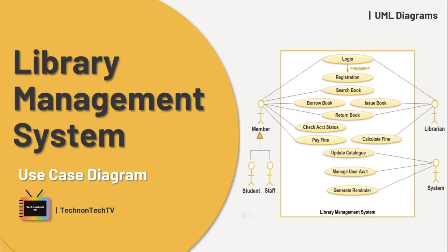The use case diagram includes essential actions such as logging into the system, returning books, borrowing books, and managing books. The librarian is responsible for tasks such as issuing books and calculating the fine. On the other hand, the member's role involves actions like borrowing books and returning them to the library.